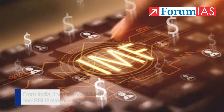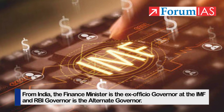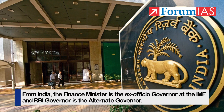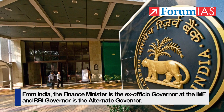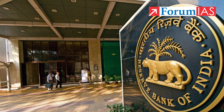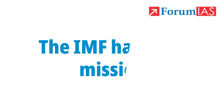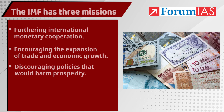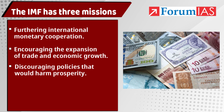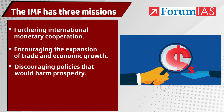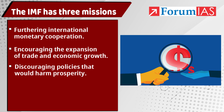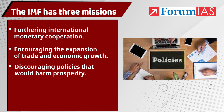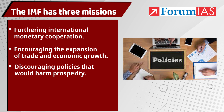From India, the Finance Minister is the ex-officio governor at the IMF and the RBI governor is the alternate governor. The IMF has three missions: furthering international monetary cooperation, encouraging the expansion of trade and economic growth, and discouraging policies that would harm prosperity.